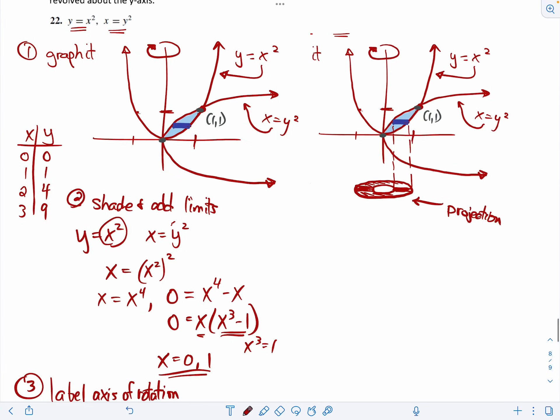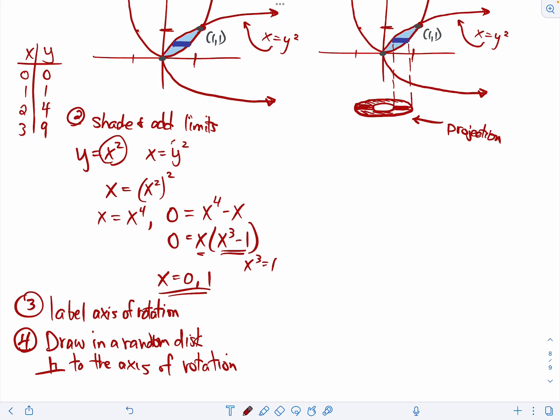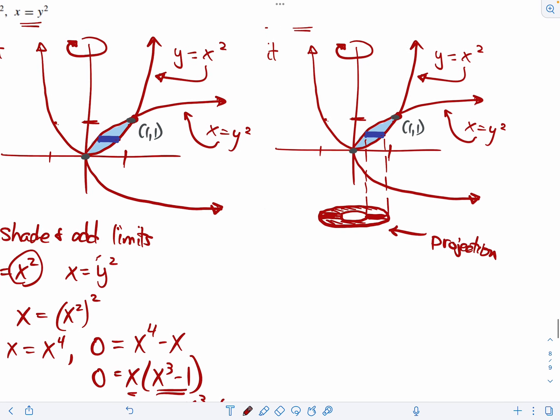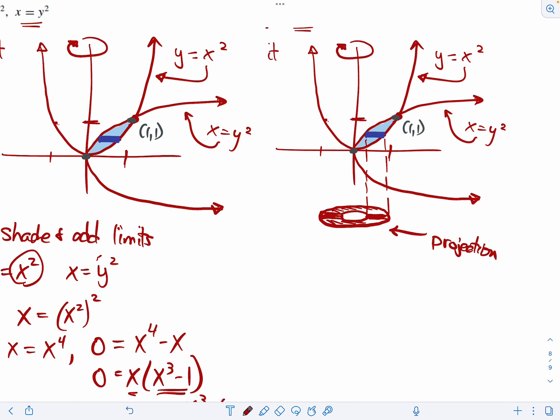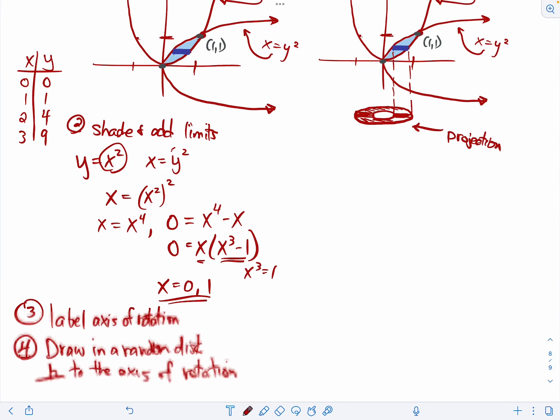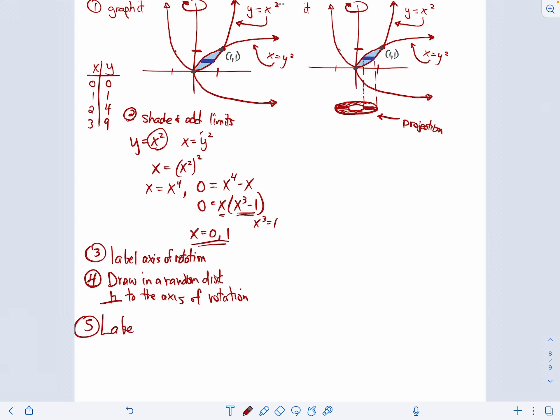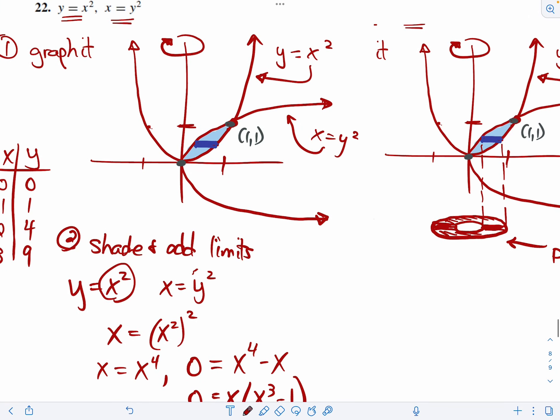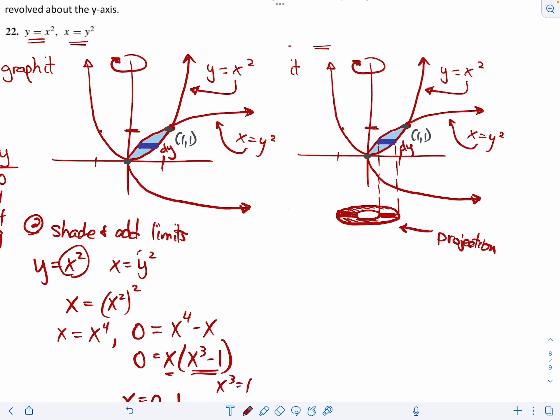Okay, so we have graphed it. We shaded and add limits. We've labeled the axis of rotation. We've drawn a random disk that's perpendicular to the axis of rotation. Step five is to label the thickness as dx or dy. Step five is to label thickness as dx or dy. When we're revolving, it's either around x or y in this case. And we are revolving around the y-axis. So our thickness is going to be in terms of y. It's going to be a vertical change, like a delta y. So I'm going to put in a little dy there and over here on my copy. That's a little dy. That is step five.